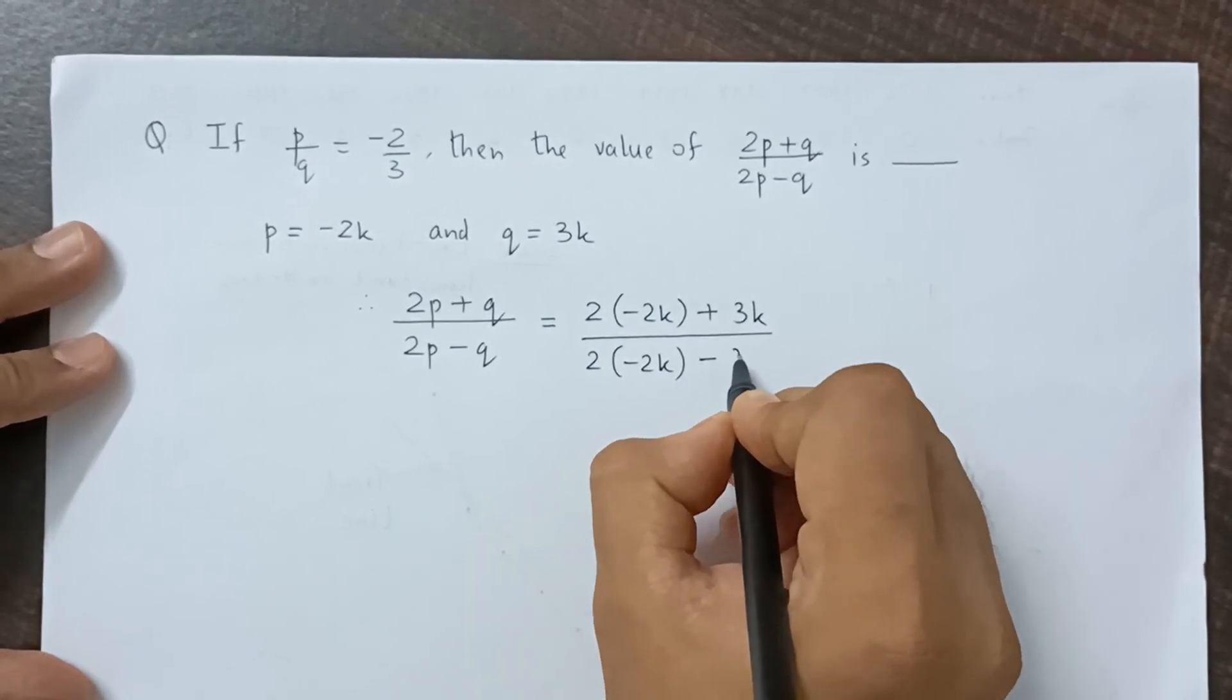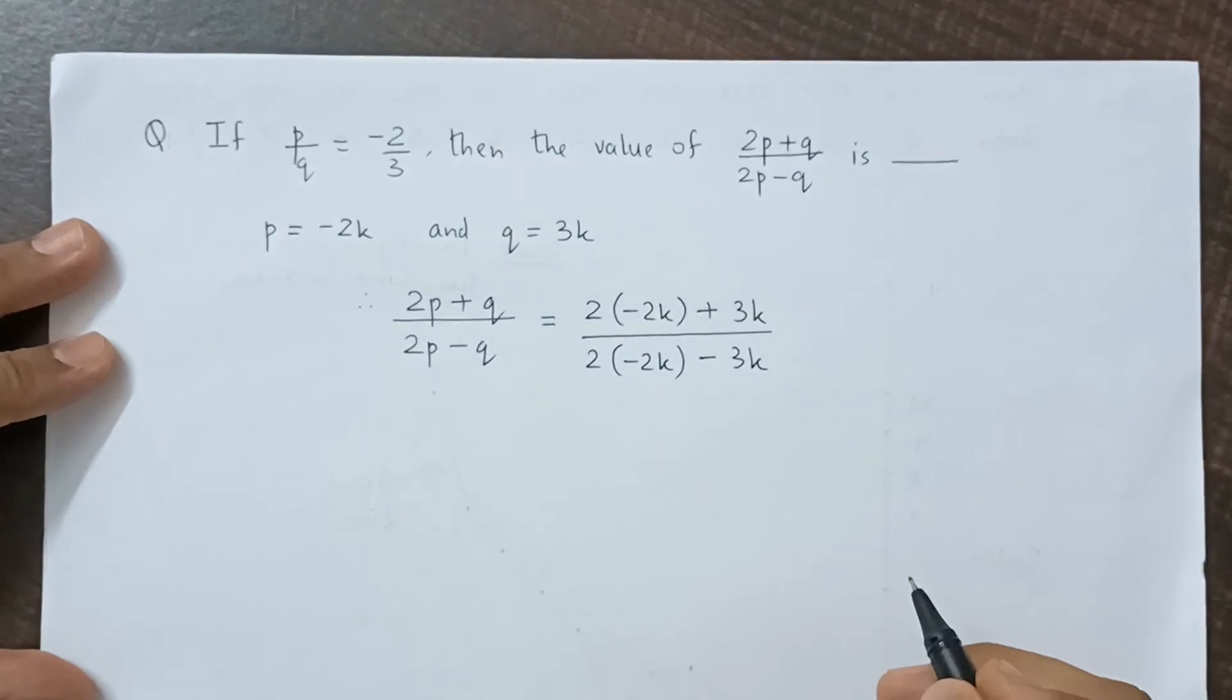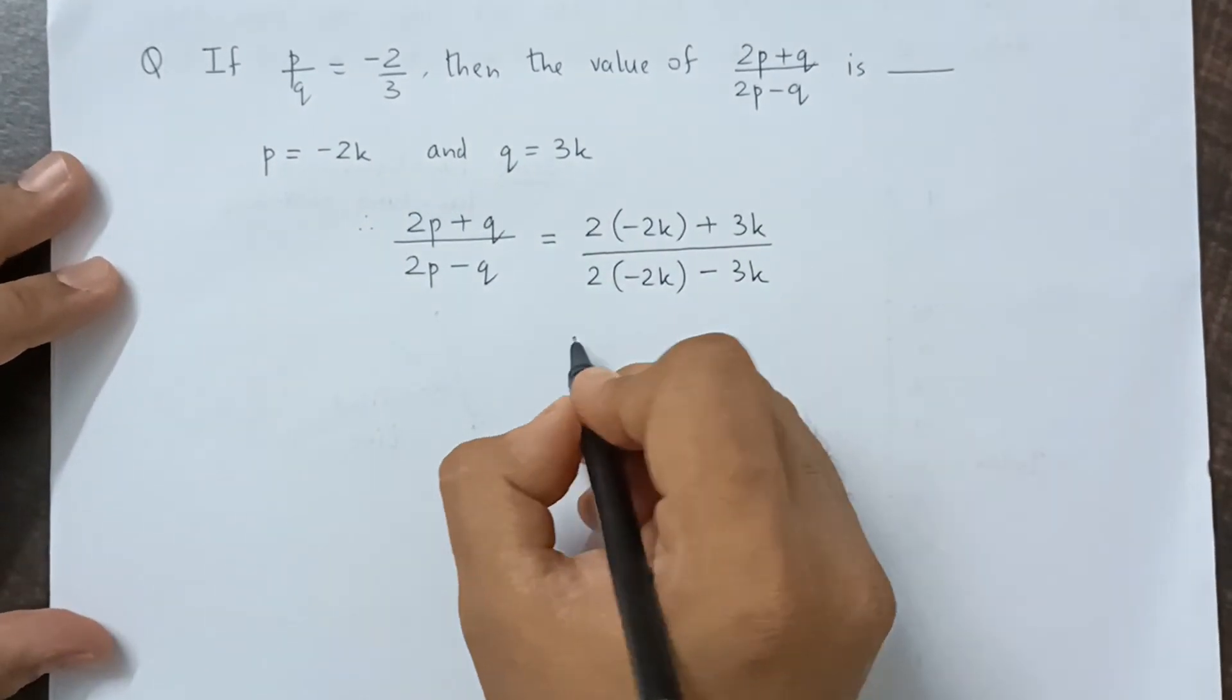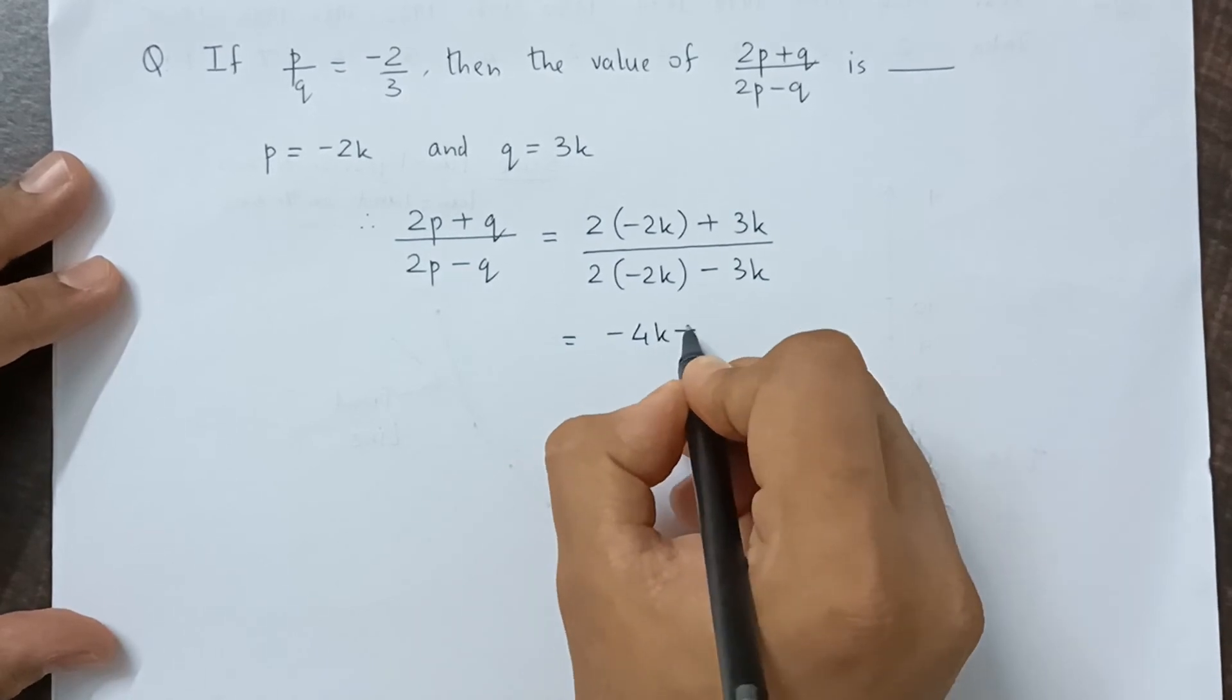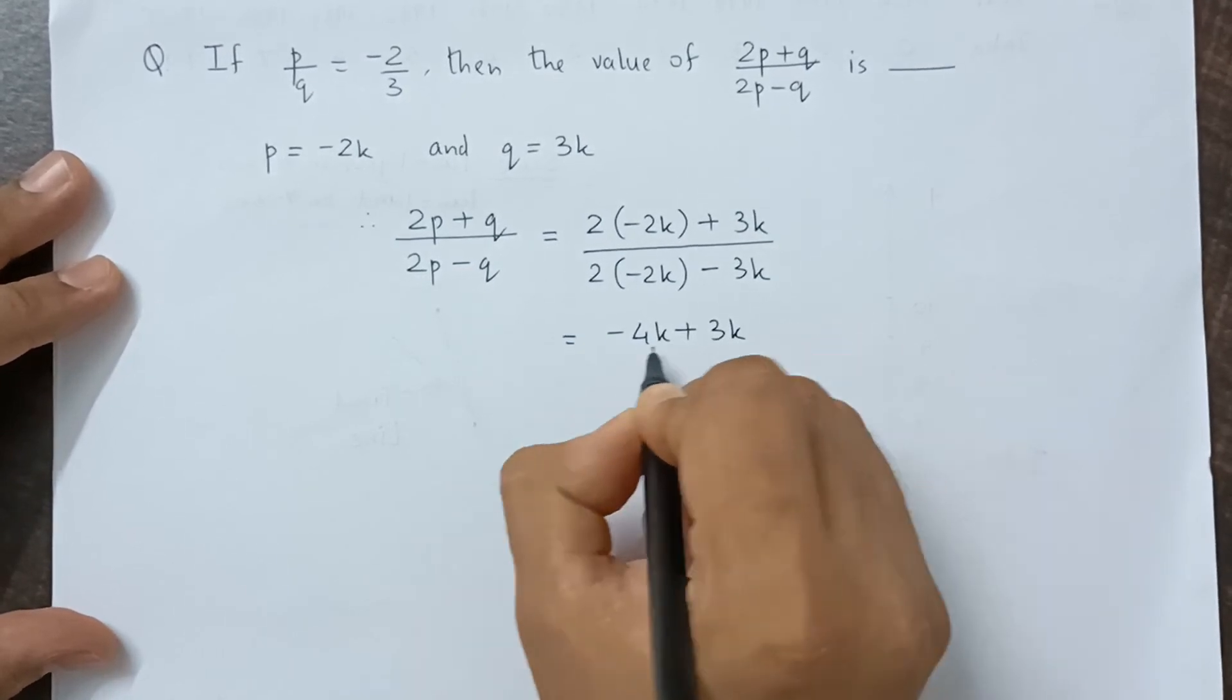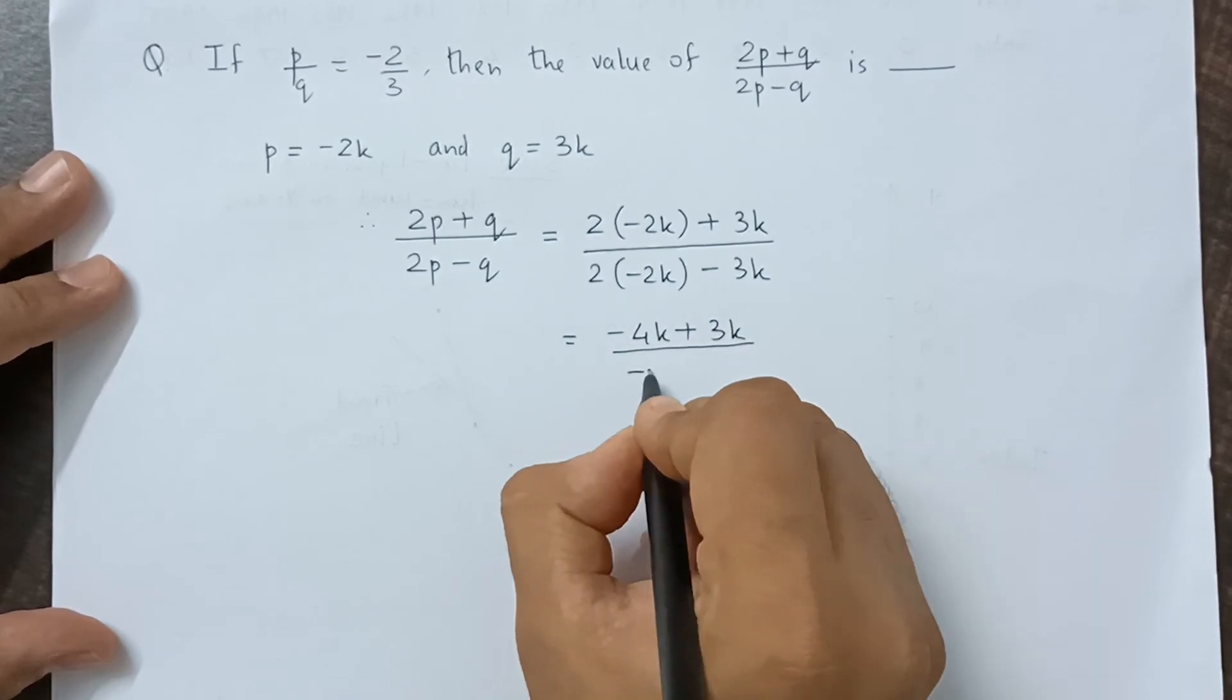If we simplify this further, we get minus 4k plus 3k, and in the denominator we have minus 4k minus 3k. The numerator value is minus k.